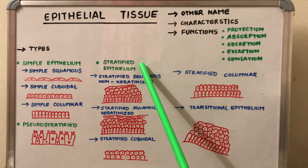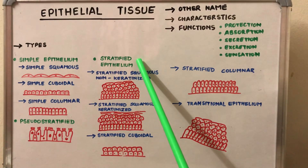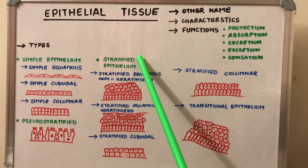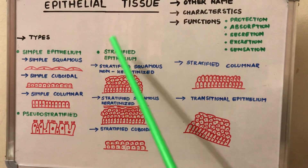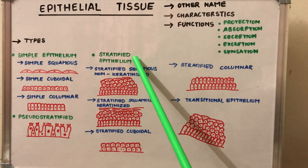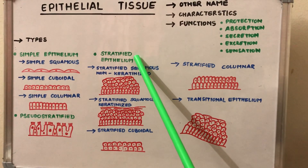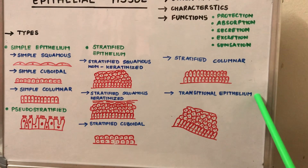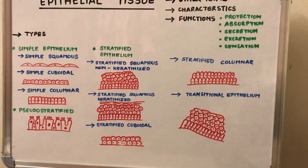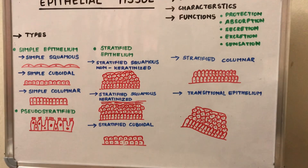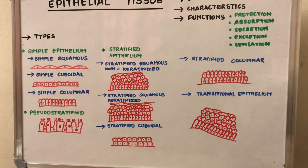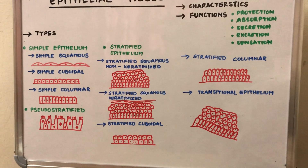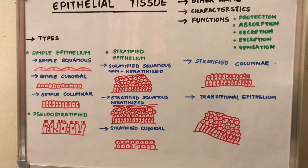Next is the stratified epithelium. Stratified means having more than one layer of cells. It is of five basic types: stratified squamous non-keratinized, stratified squamous keratinized, stratified cuboidal, stratified columnar, and transitional epithelium.